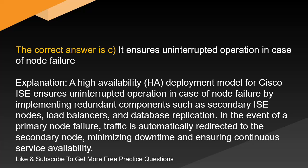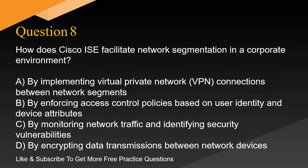Explanation. A high-availability deployment model for Cisco ISE ensures uninterrupted operation in case of node failure by implementing redundant components such as secondary ISE nodes, load balancers, and database replication. In the event of a primary node failure, traffic is automatically redirected to the secondary node, minimizing downtime and ensuring continuous service availability.